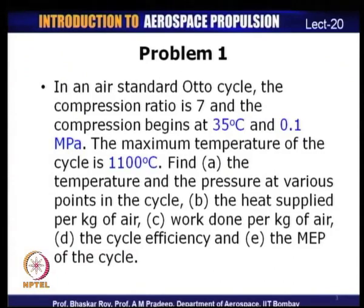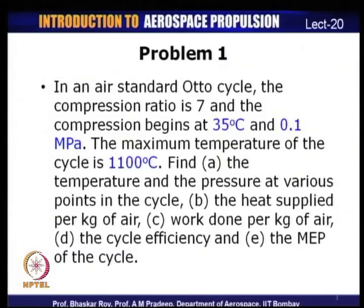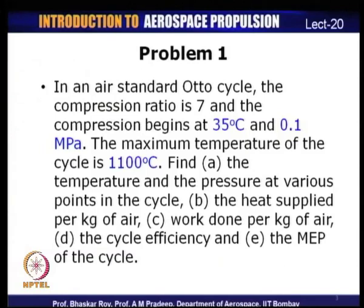Problem 1 is that of an Otto cycle. In an air standard Otto cycle, the compression ratio is 7 and compression begins at 35°C and a pressure of 0.1 MPa. The maximum temperature of the cycle is 1100°C. Find: (A) temperature and pressure at various points in the cycle, (B) heat supplied per kilogram of air, (C) work done per kilogram of air, (D) cycle efficiency, and (E) the mean effective pressure (MEP) of the cycle.